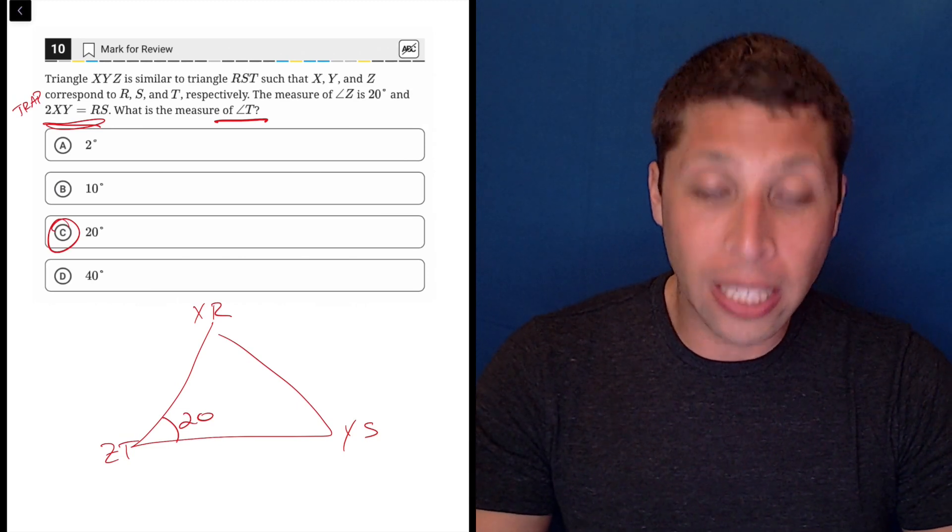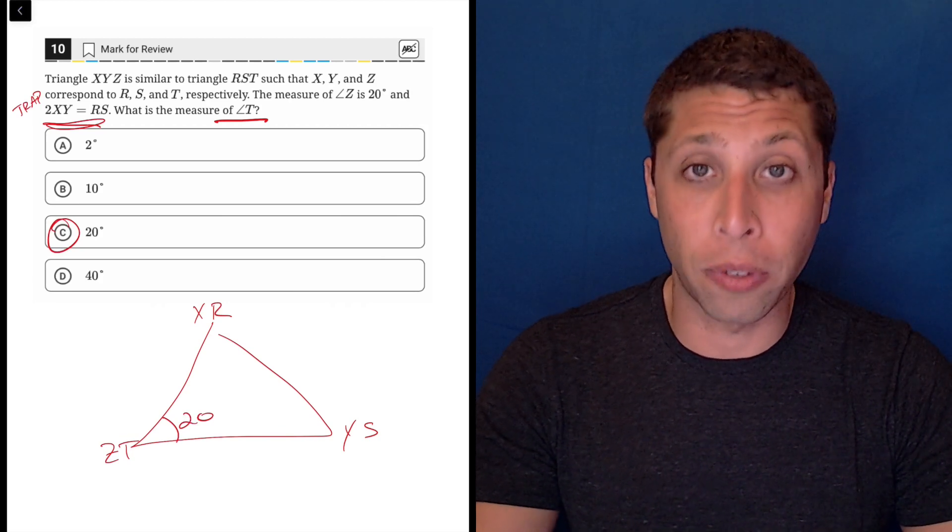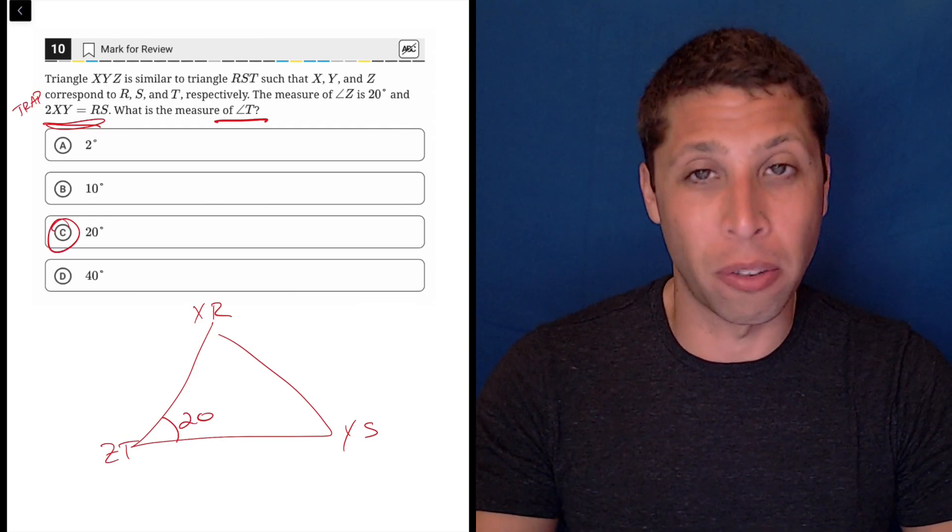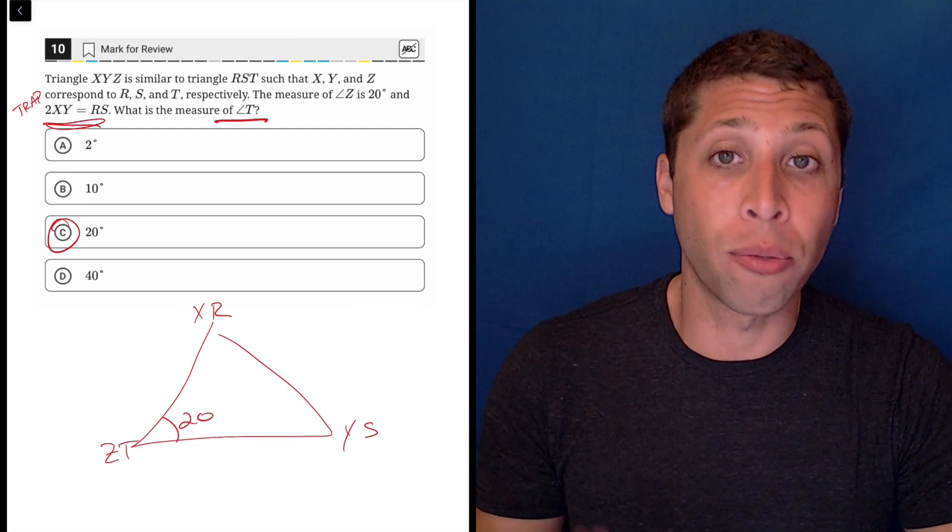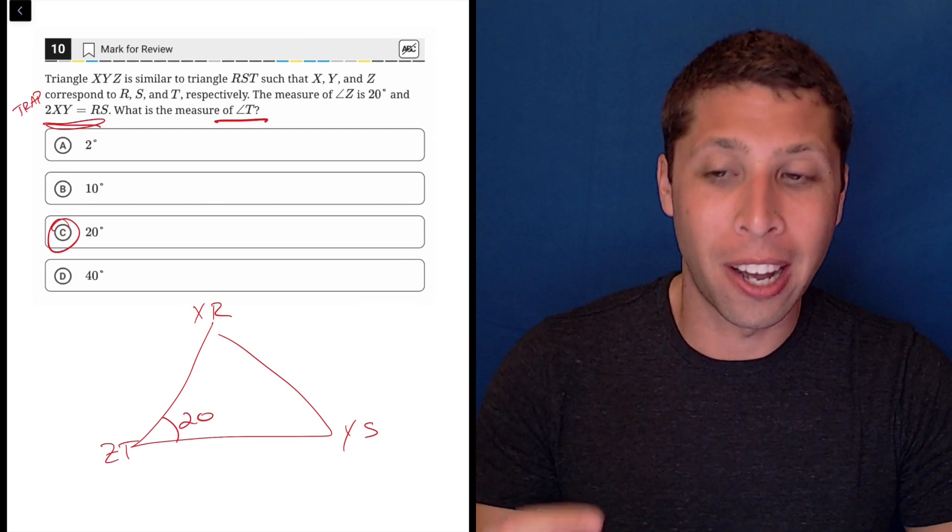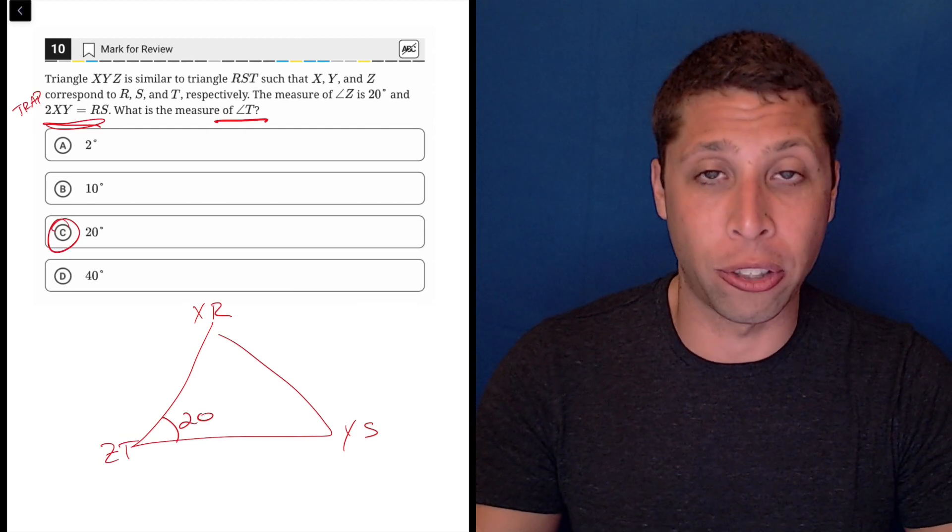So this is a very common thing the SAT does. They like to ask about similar triangles, so you need to know the rules for that, but they also like to do it in this way where maybe they throw you some extra piece of information you don't use. So that's why it's really important to understand why similar triangles exist and how they match with each other and focus really on the angle measures.